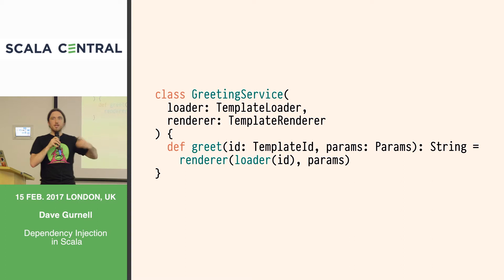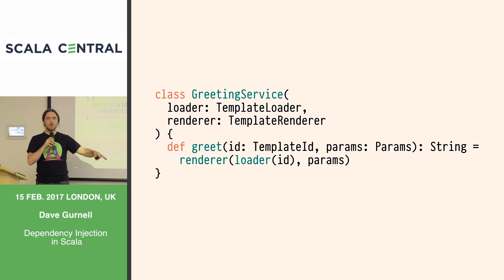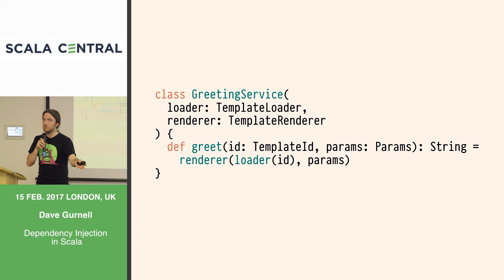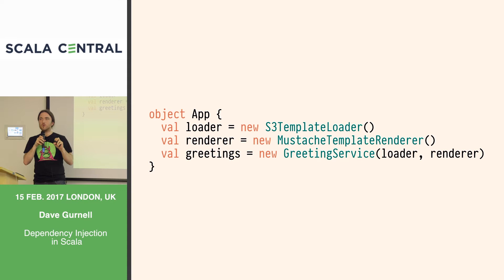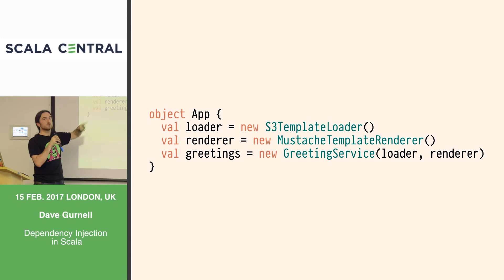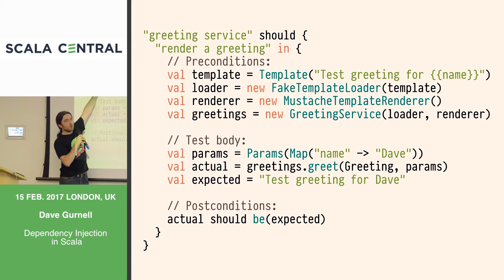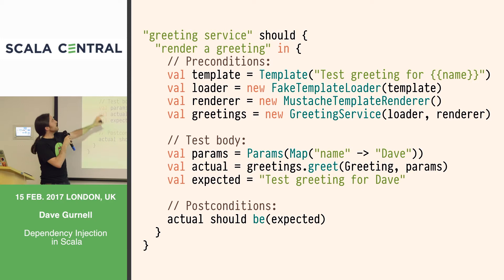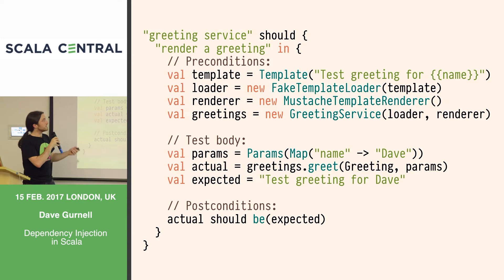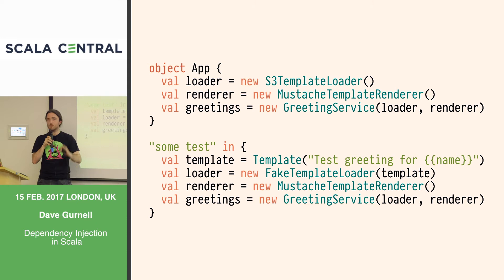When we make this transformation from fixed dependencies to reconfigurable ones, we gain a little bit of technical overhead — every time I want to use a greeting service, I now have to build it. So you start getting things like an app object or a wiring object where you create the greeting service by creating its dependencies. You get a little overhead in your production app wiring, and also in your tests, where you have to create all the components before running your assertions. You can normally factor these out into fixtures.